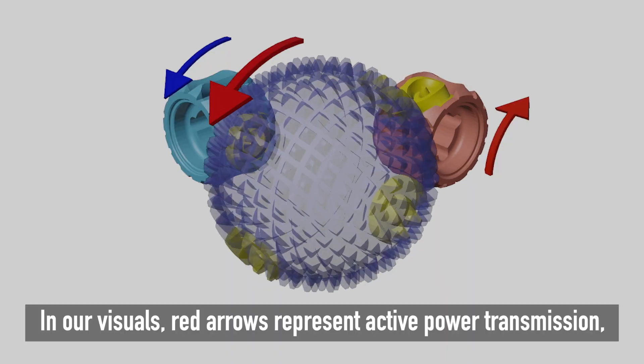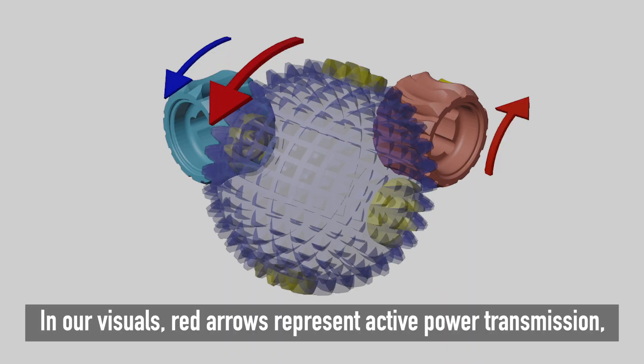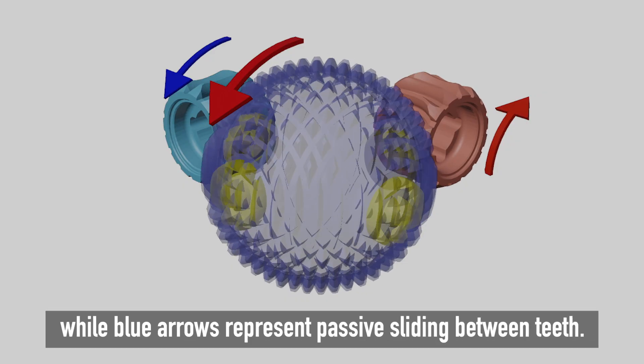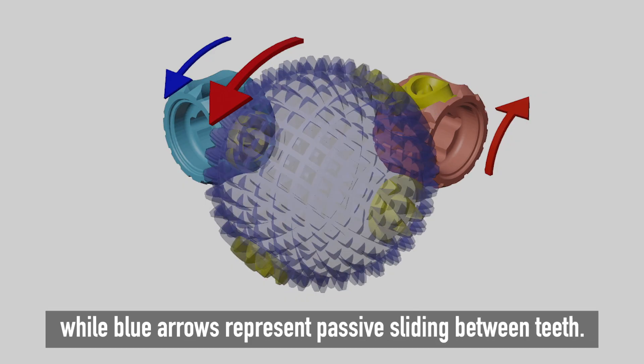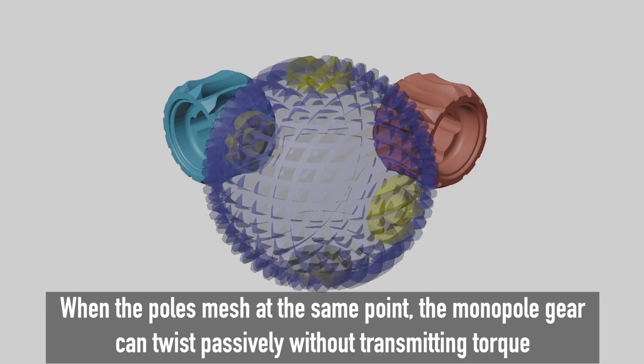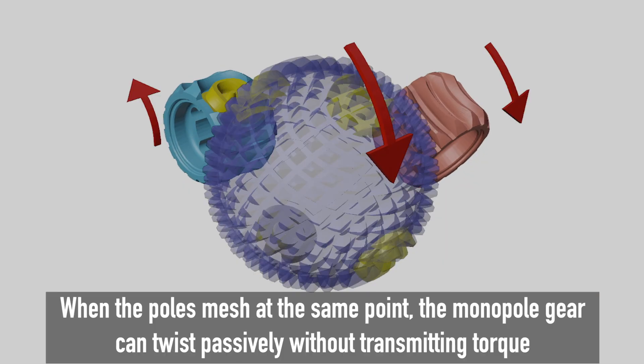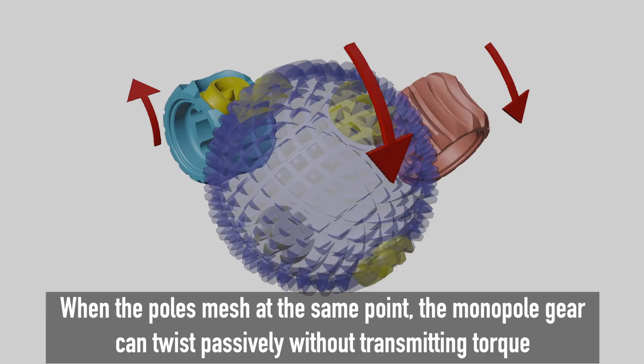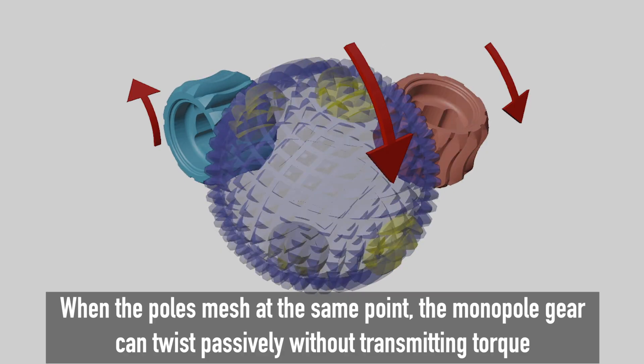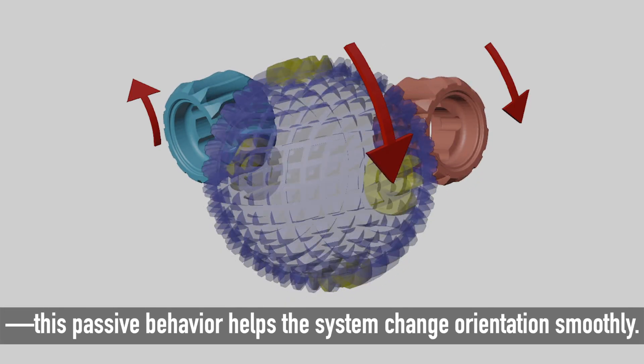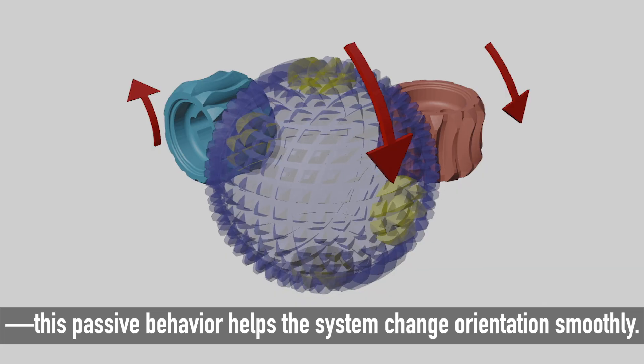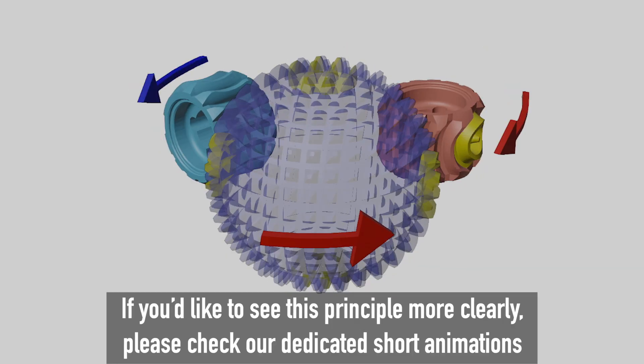In our visuals, red arrows represent active power transmission, while blue arrows represent passive sliding between teeth. When the poles mesh at the same point, the monopole gear can twist passively without transmitting torque. This passive behavior helps the system change orientation smoothly.